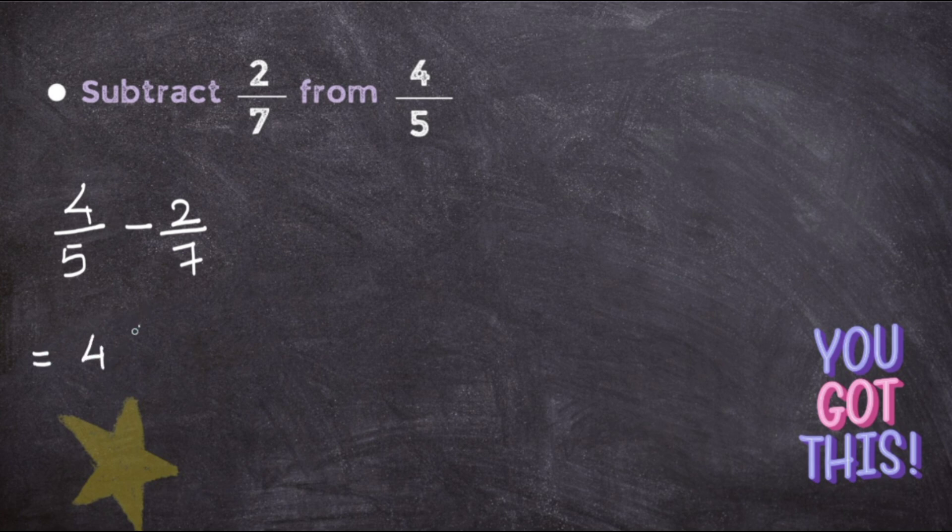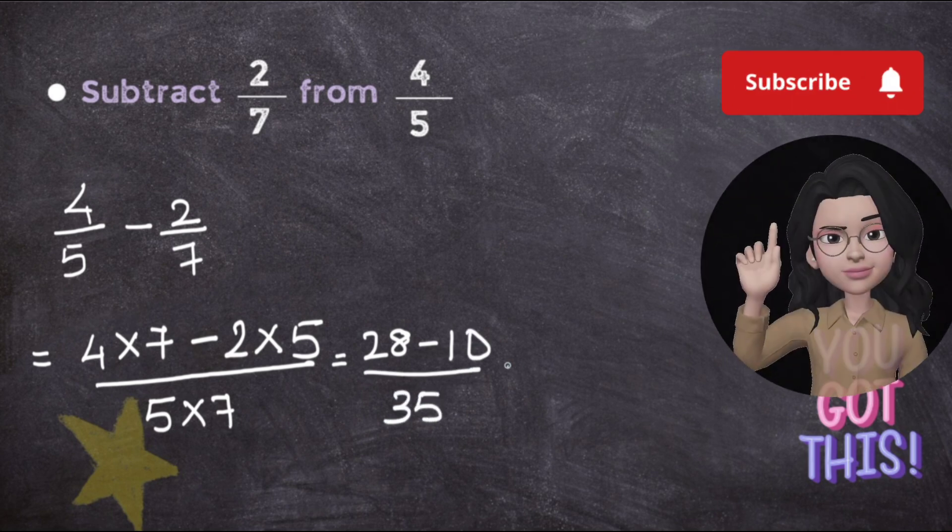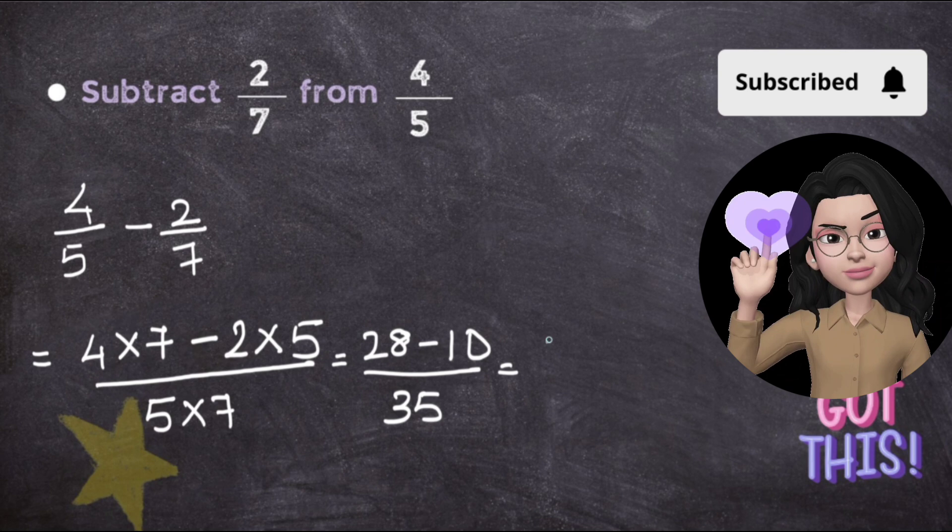So go to the third step. That is, directly go and do the cross multiplication. So here it will be 4 into 7, the denominator of the other fraction, minus 2 into 5, whole upon 5 into 7. 4 times 7 is 28 minus 2 times 5 is 10, whole upon 5 times 7 is 35.